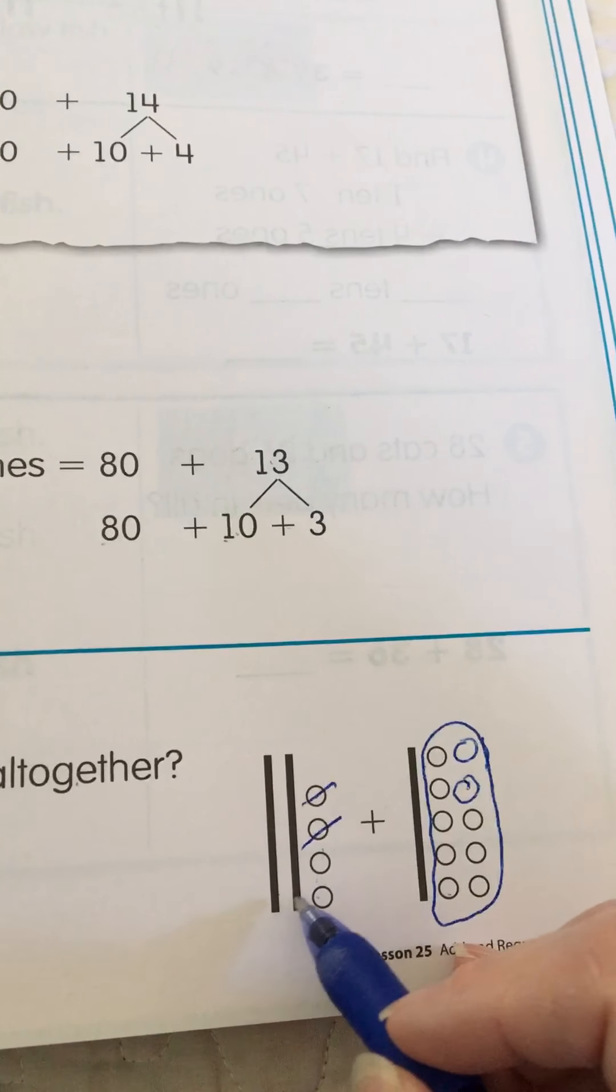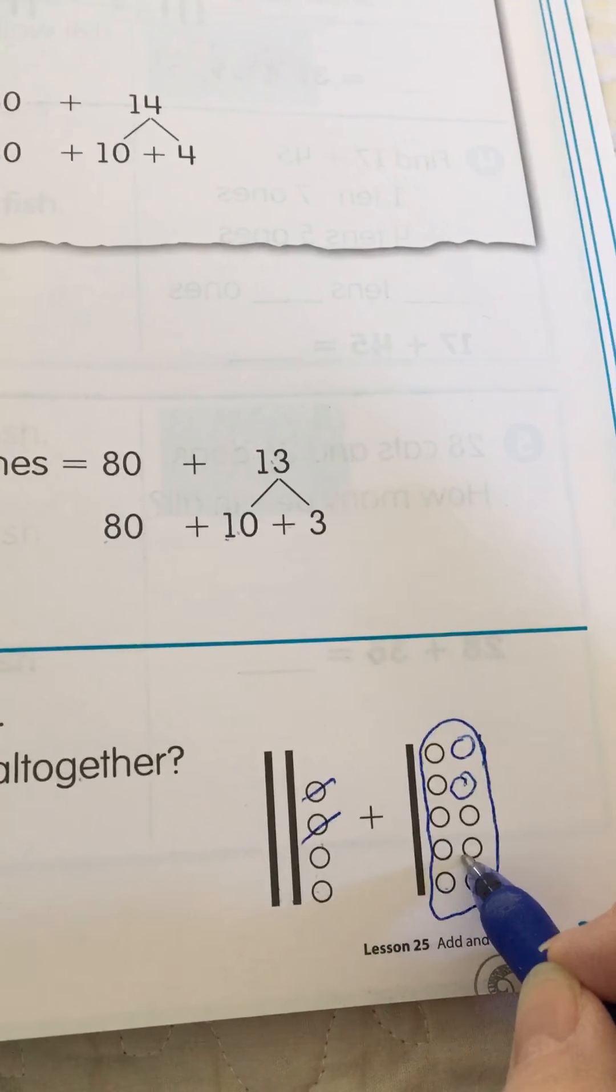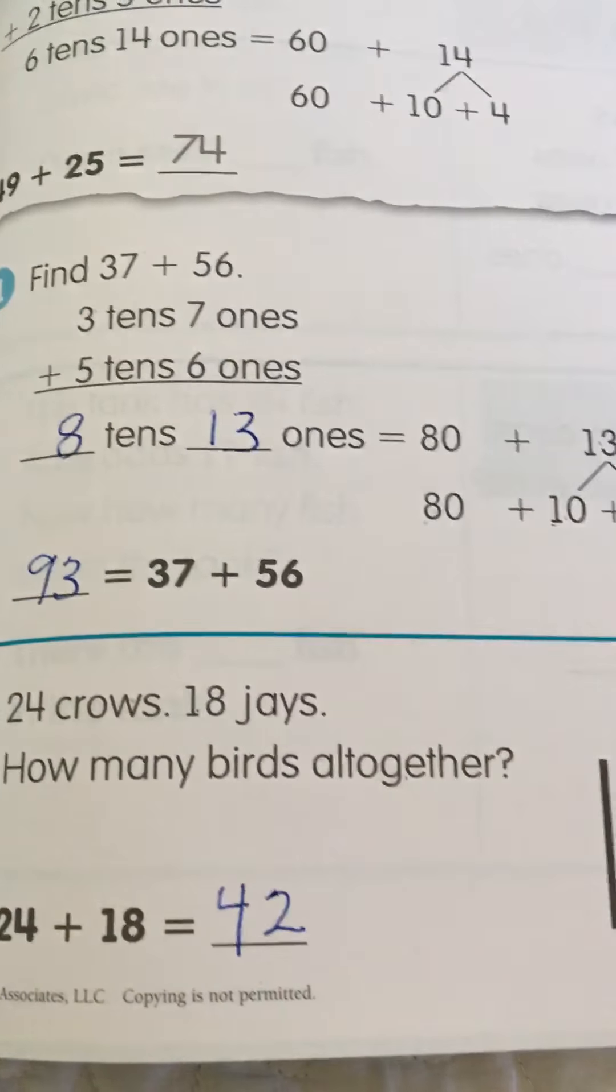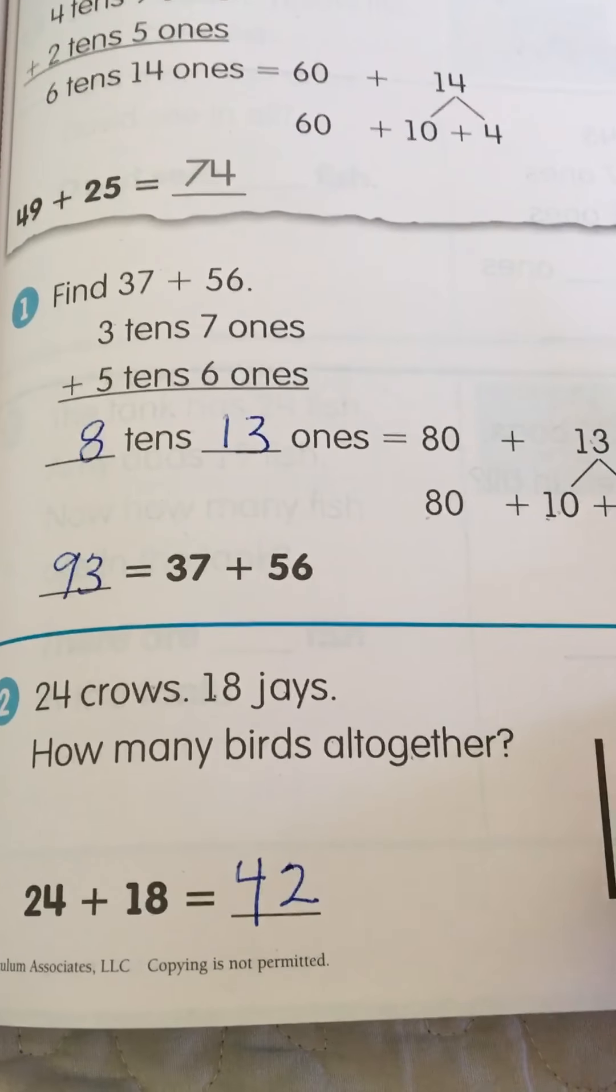How many tens? Let's count them. There's 10, 20, 30, 40. So we have four tens. 40. And our answer is 42.